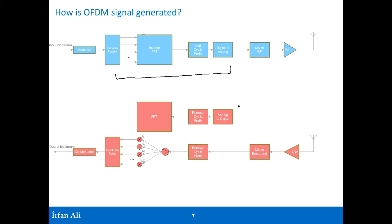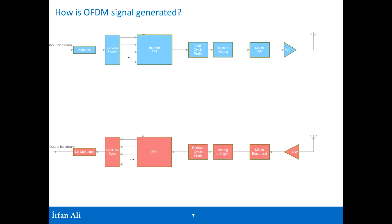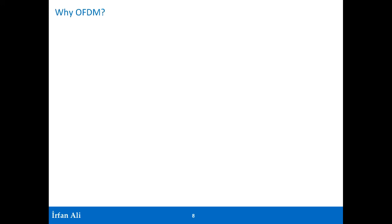On the receiver side, the analog signal is converted to digital and all processing is done in the digital domain. You perform an FFT, which gives you your Fourier coefficients — effectively demodulating the subcarriers. The receiver chain is thus replaced by an FFT-based digital implementation. This transmitter-receiver pair using IFFT and FFT is the fundamental architecture for OFDM and is described in many textbooks.